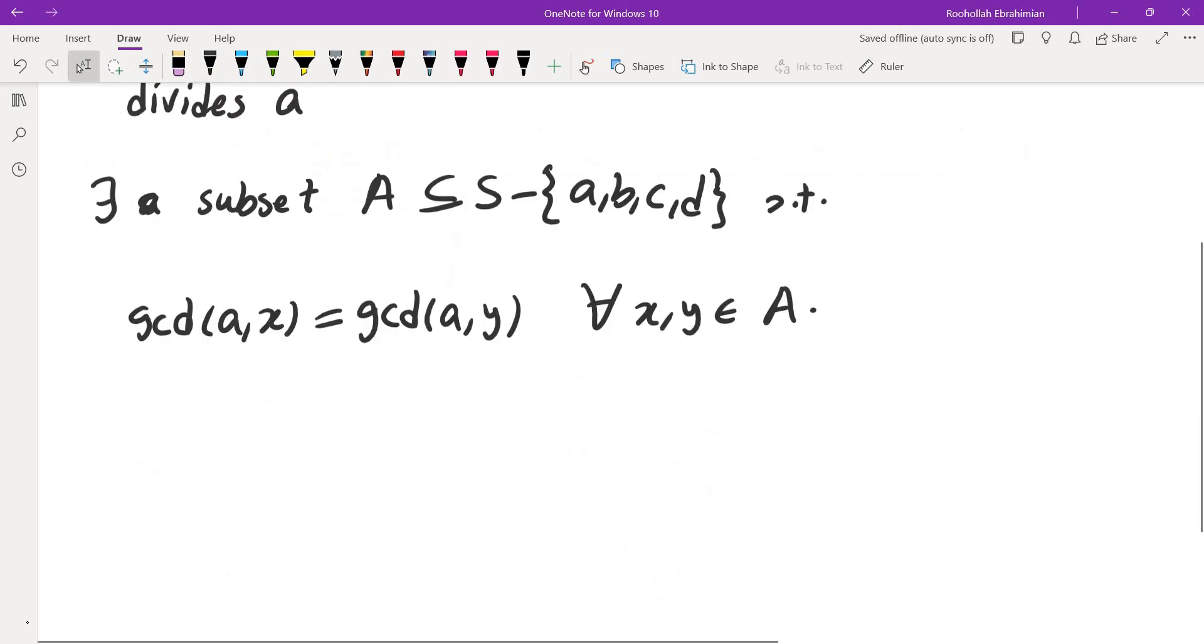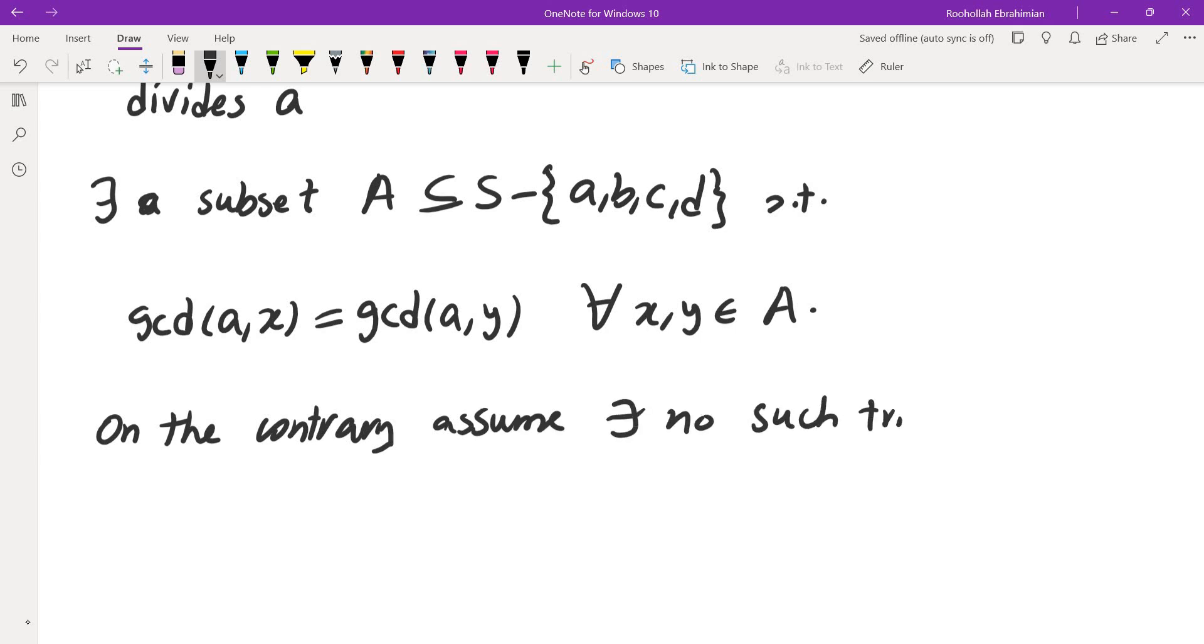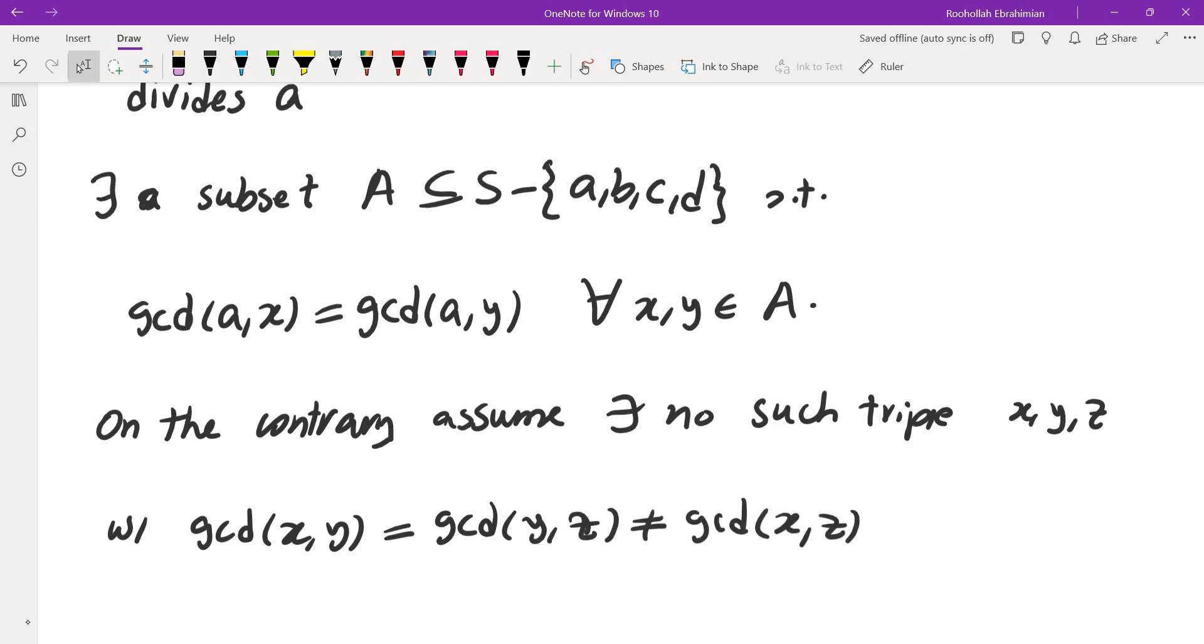So let's do proof by contradiction. On the contrary, assume there is no such triple x, y, z with gcd(x,y) equals gcd(y,z) but not the same as gcd(x,z). So let's assume that's the case.